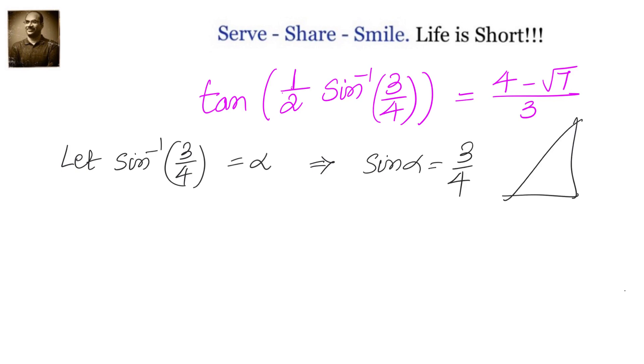Then sin alpha is three-fourths. Using a triangle for alpha, I can find the missing side is root seven, so cos alpha is root seven by four.